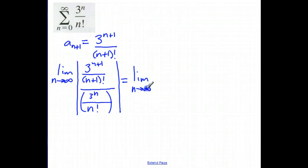The limit as n approaches infinity of the absolute value of 3 to the n plus 1 over n plus 1 factorial times the reciprocal, that denominator. So it's going to be n factorial over 3 to the n. And that's easier to work with, because watch what happens.